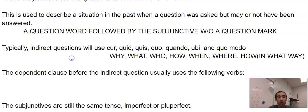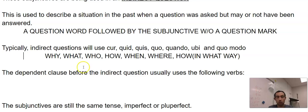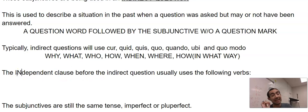The dependent clause—or the independent clause, excuse me, not the dependent. This is an independent clause because they are the main clause. The main clause before the indirect question usually uses these verbs.